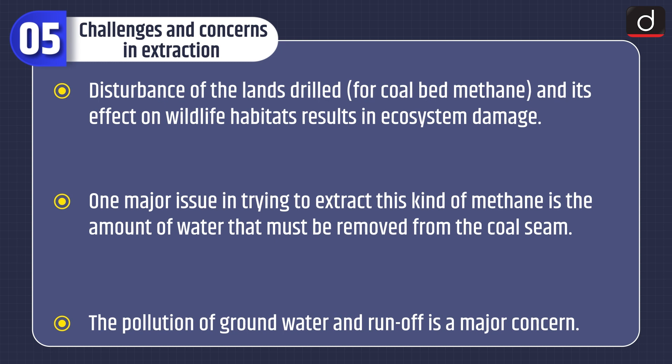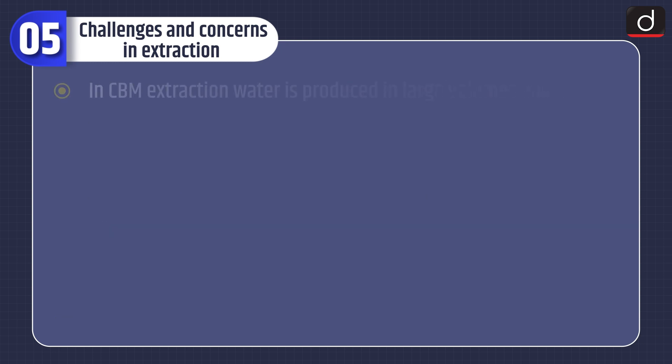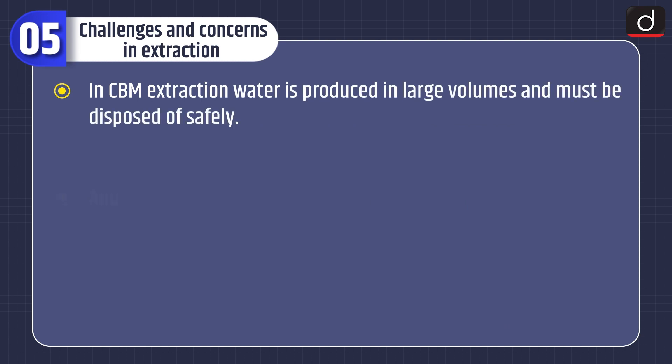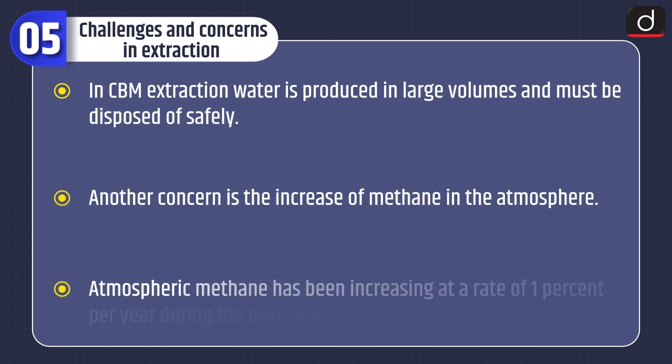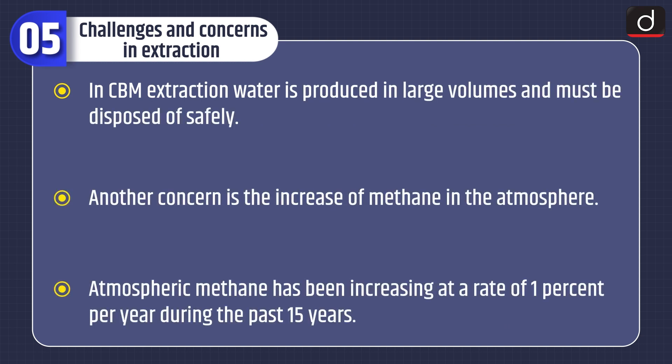One major issue in trying to extract this kind of methane is the amount of water that must be removed from the coal seam. The pollution of groundwater and runoff is a major concern. In CBM extraction, water is produced in large volumes and must be disposed of safely. Another concern is the increase of methane in the atmosphere.